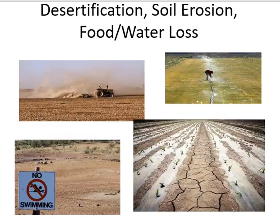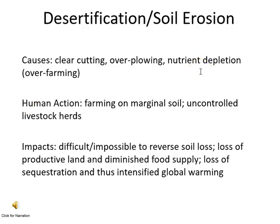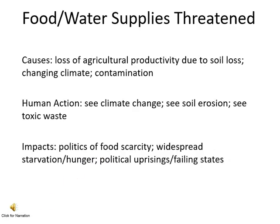This brings us to our next problems: desertification, soil erosion, and food and water loss, which often happen on the heels of deforestation and over-farming. Clear cutting, over-plowing, and nutrient depletion from over-farming are some of the main causes of desertification and soil erosion. The human part of this is farming on marginal soil, particularly in places with low levels of precipitation, and also places where there are uncontrolled livestock herds, as animals may eat vegetation and contribute to soil erosion. The impacts are multi-faceted; we know it's impossible to reverse soil loss. Loss of productive land can lead to diminished food supply and capacity for farming, and this also reduces sequestration and intensifies global warming.